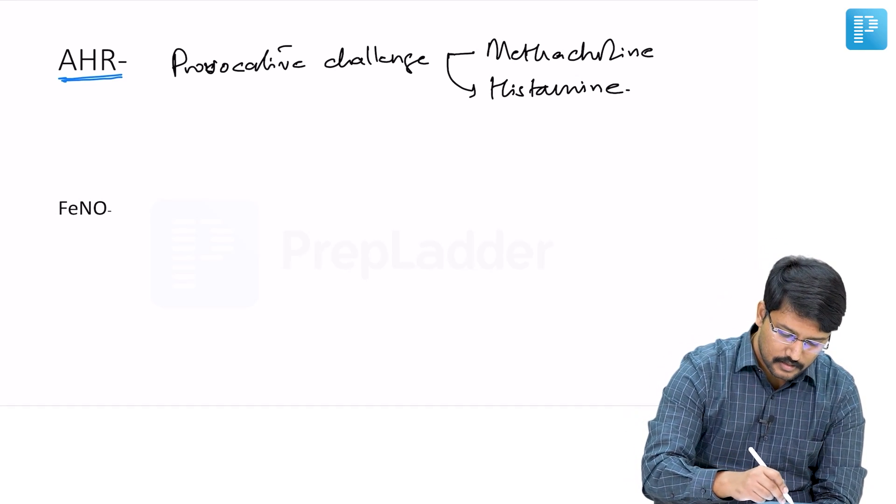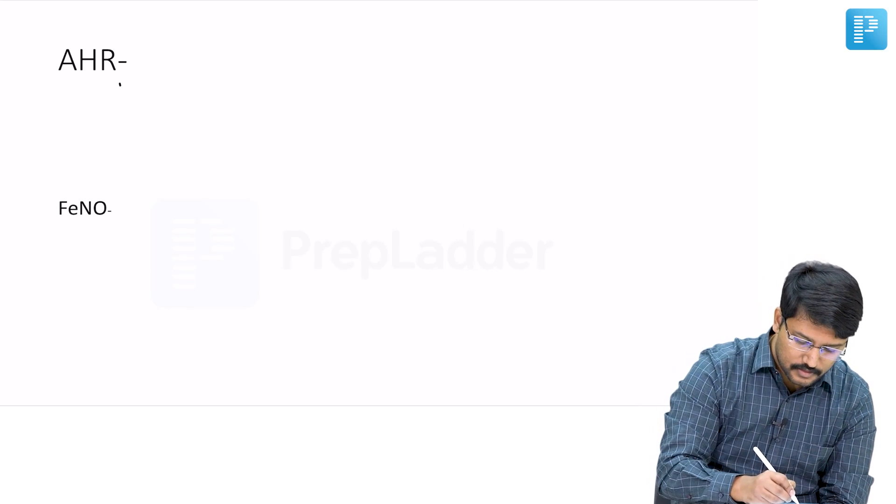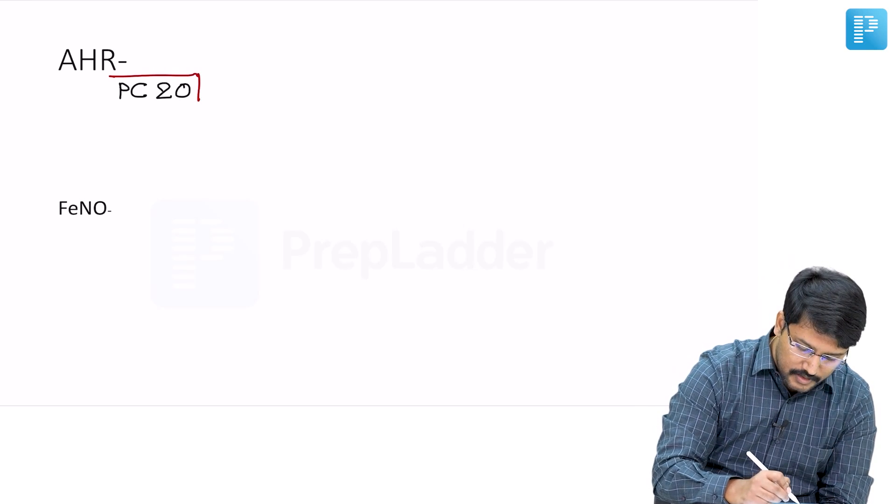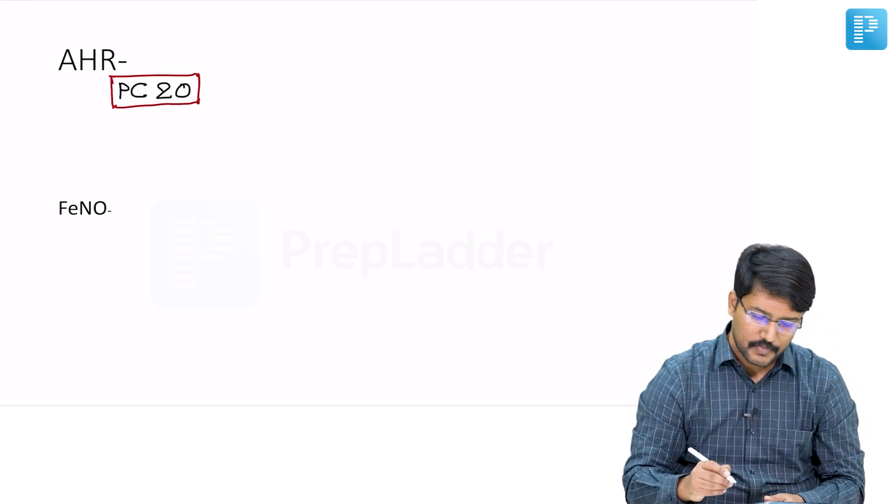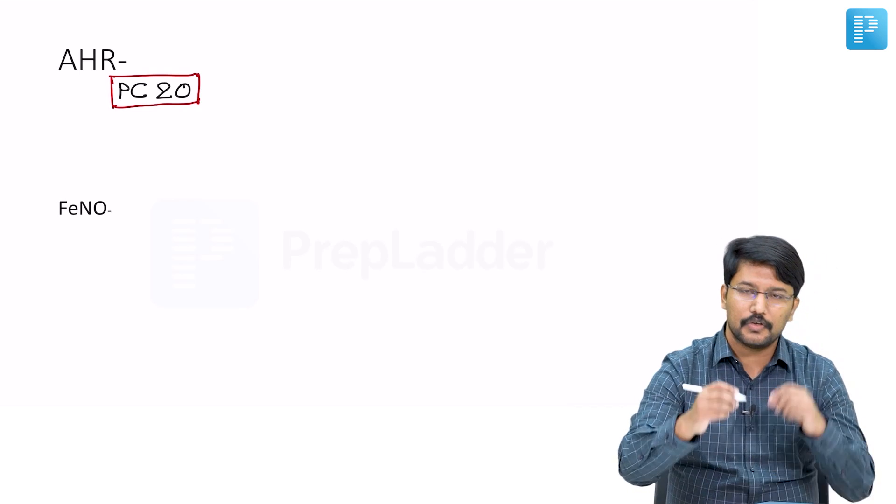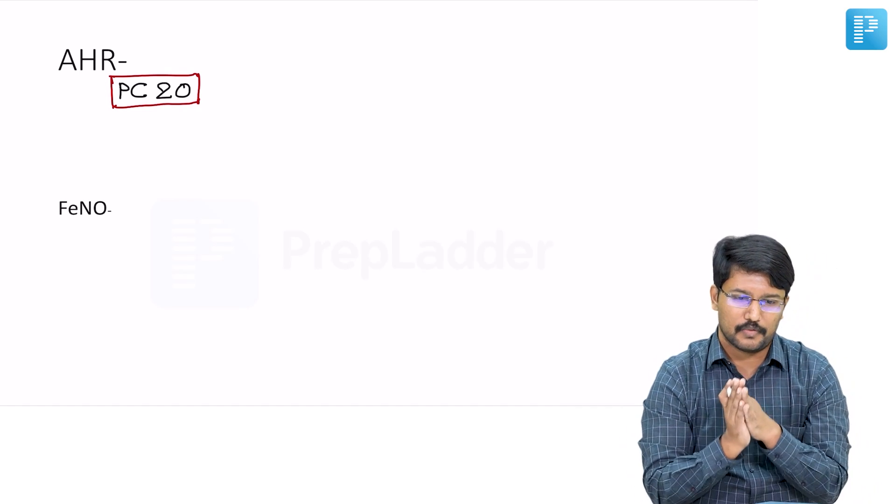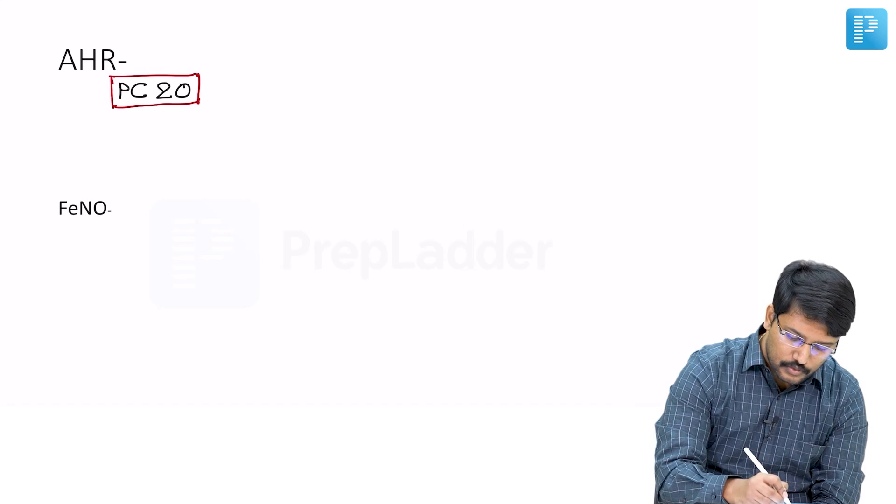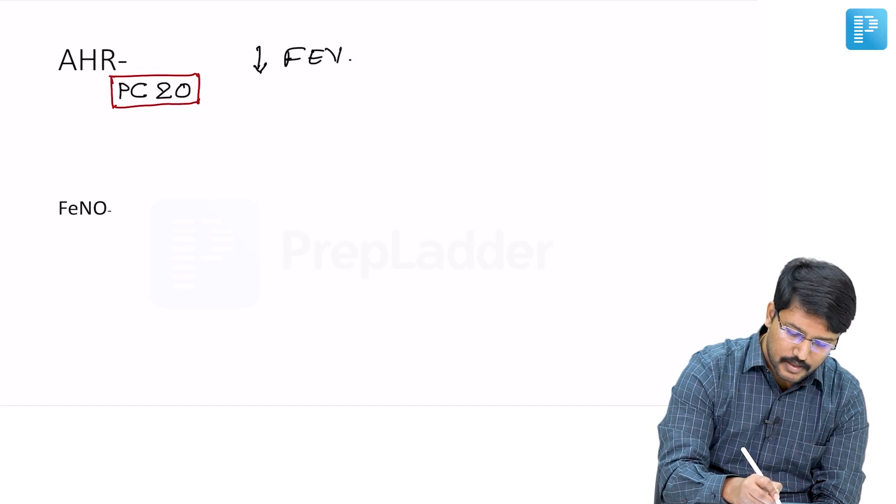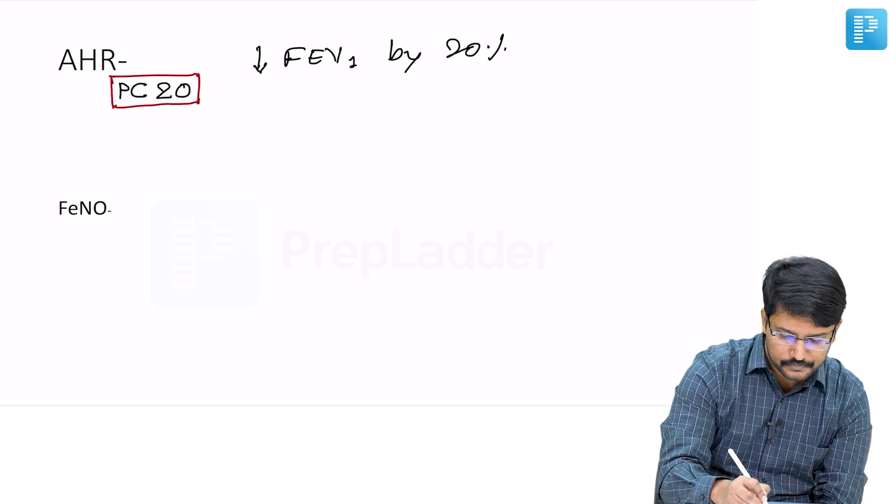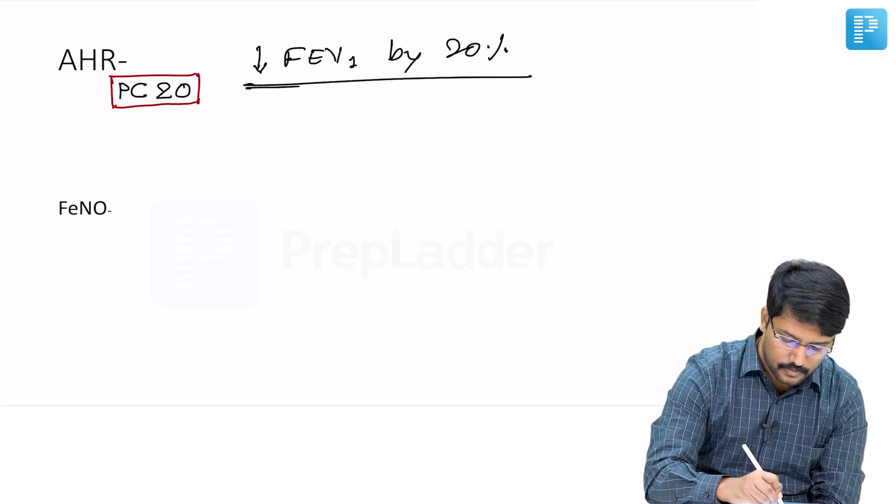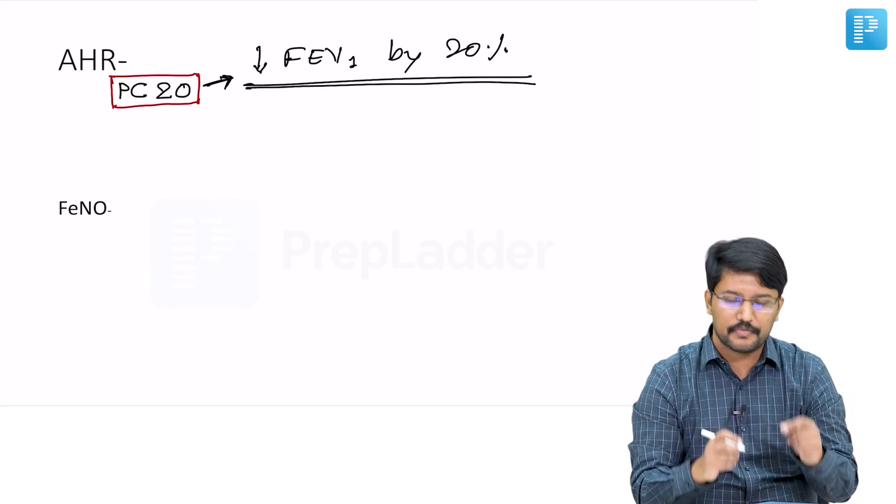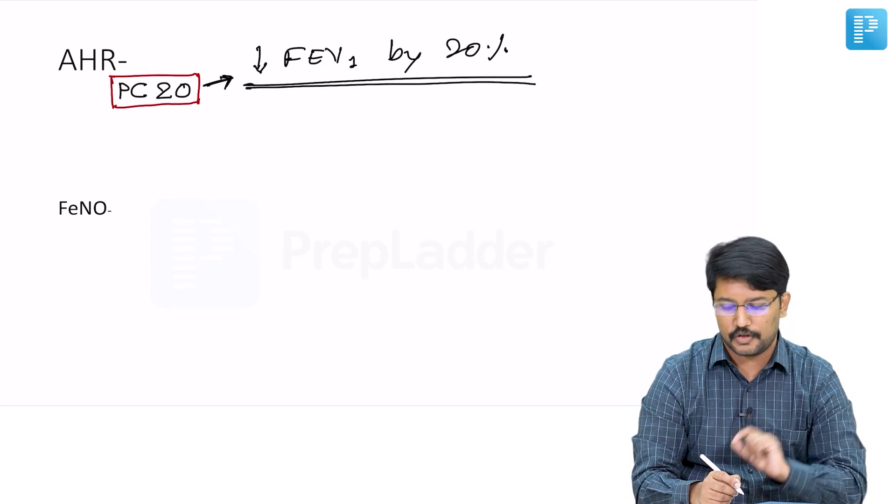Histamine or methacholine may trigger the bronchoconstriction or asthma in select set of patients. We can quantitatively assess the hyperresponsiveness using a criteria known as PC20, or provocative challenge dose 20. What is PC20? It is the concentration of the methacholine or histamine or whatever you are using as a provocative agent—the concentration that is required to reduce the FEV1 by 20 percent.